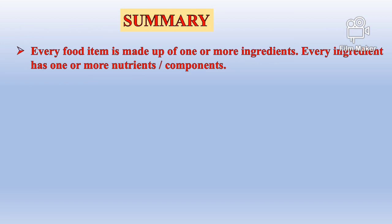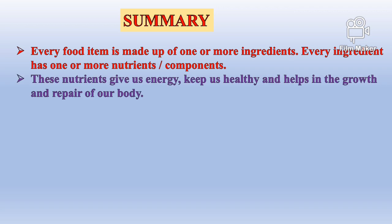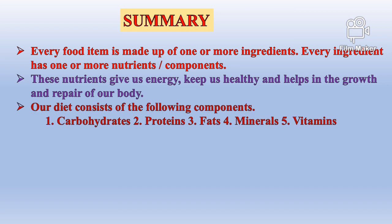Summary: Every food item is made up of one or more ingredients. Every ingredient has one or more nutrients or components. These nutrients give us energy, keep us healthy, and help in the growth and repair of our body. Our diet consists of the following components: carbohydrates, proteins, fats, minerals and vitamins.